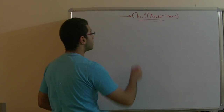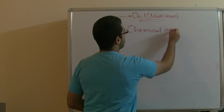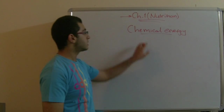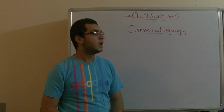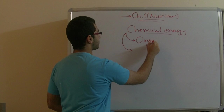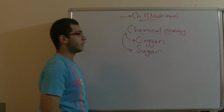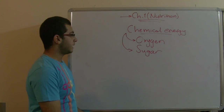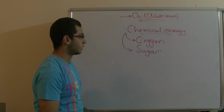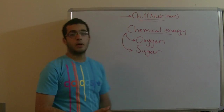Regarding the chemical energy: when the plant uses active transport, it consumes part of its chemical energy. This chemical energy is obtained through oxygen and sugar, which are used in the respiration of the plant. Accordingly, both oxygen and sugar are important for active transport and for salt absorption in the plant.